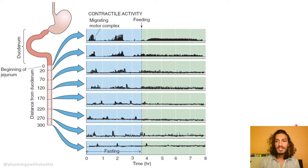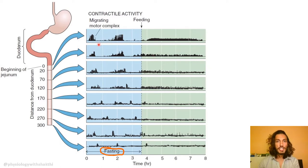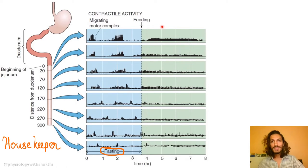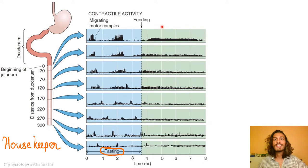Apart from the fed state, in the fasting state is when the Migrating Motor Complex appears. It has a phasic variation and is called the 'housekeeper' of the GIT. What it does is ensure that before the next feed, the luminal contents from the previous meal are evacuated — it sweeps away old contents to make space for new ones. That's why it's called the housekeeper of the GIT.